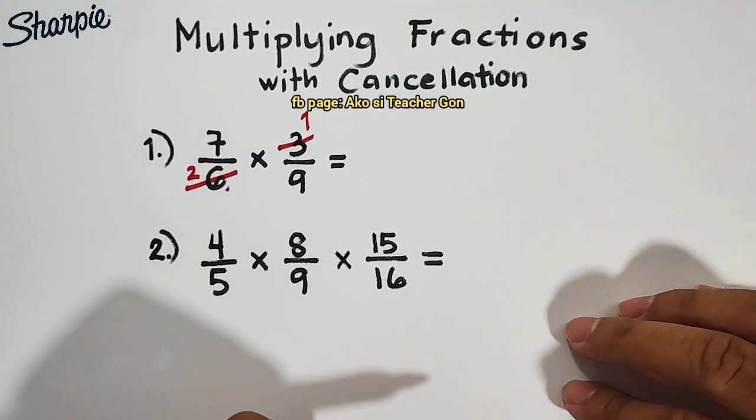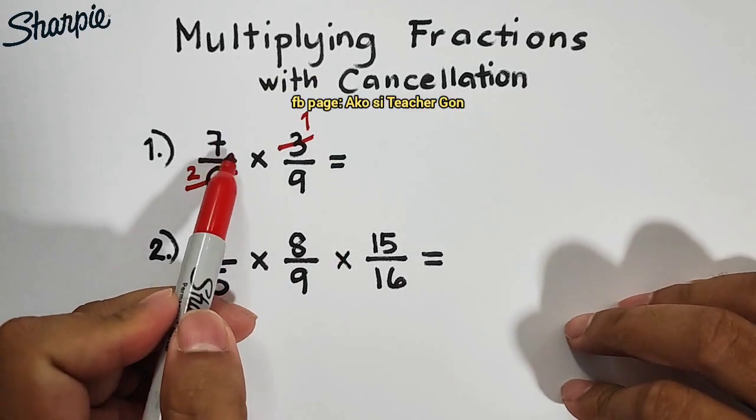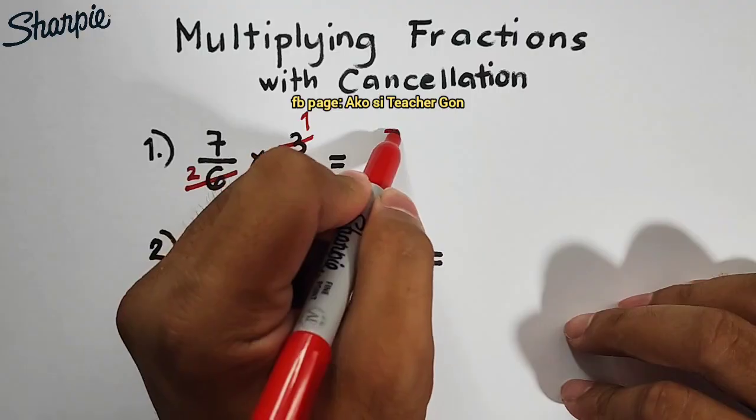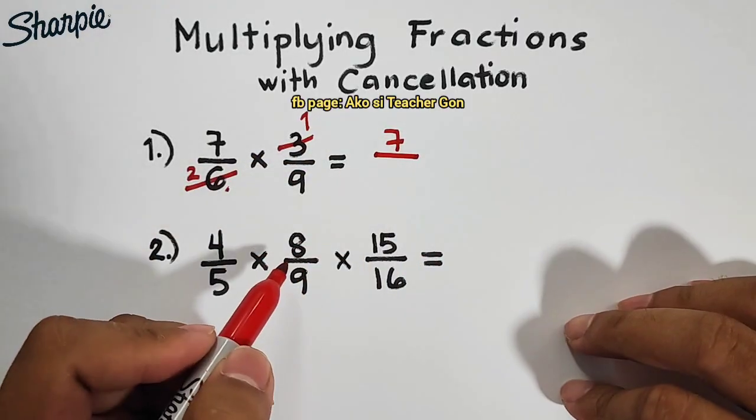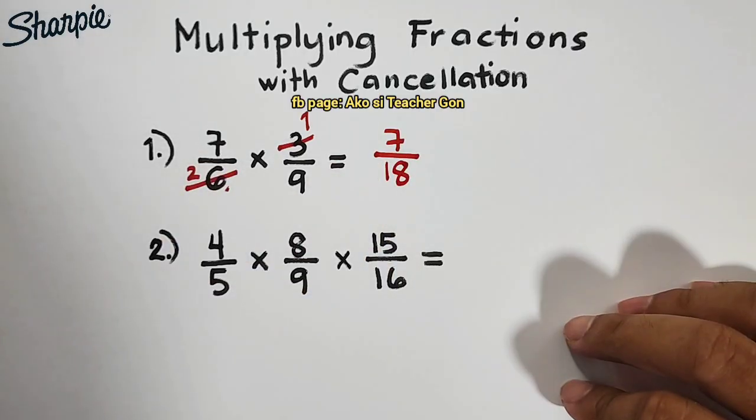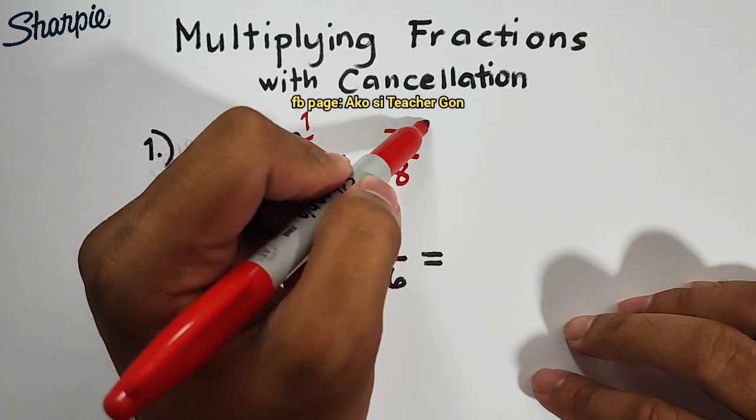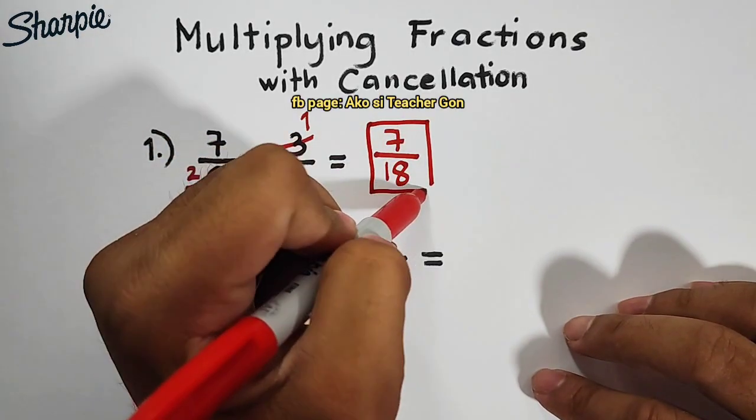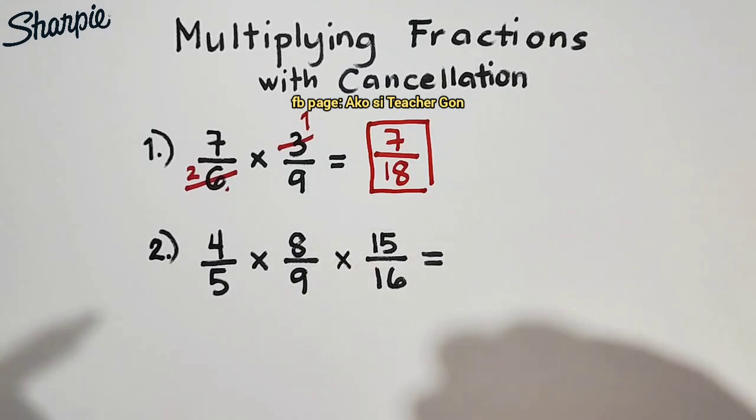That is 7 times 1, which is equal to 7, over 2 times 9, which is equal to 18. So, as you can see, this fraction is already simplified. That's why our answer is 7 over 18.